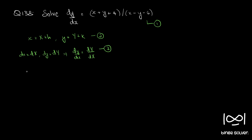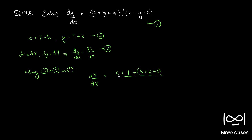Using equations 2 and 3 in equation 1, we have dY/dX equal to (X plus Y plus h plus k plus 4) over (X minus Y plus h minus k minus 6). So if we find h and k such that h plus k plus 4 equals 0 and h minus k minus 6 equals 0, we reduce this to homogeneous form.